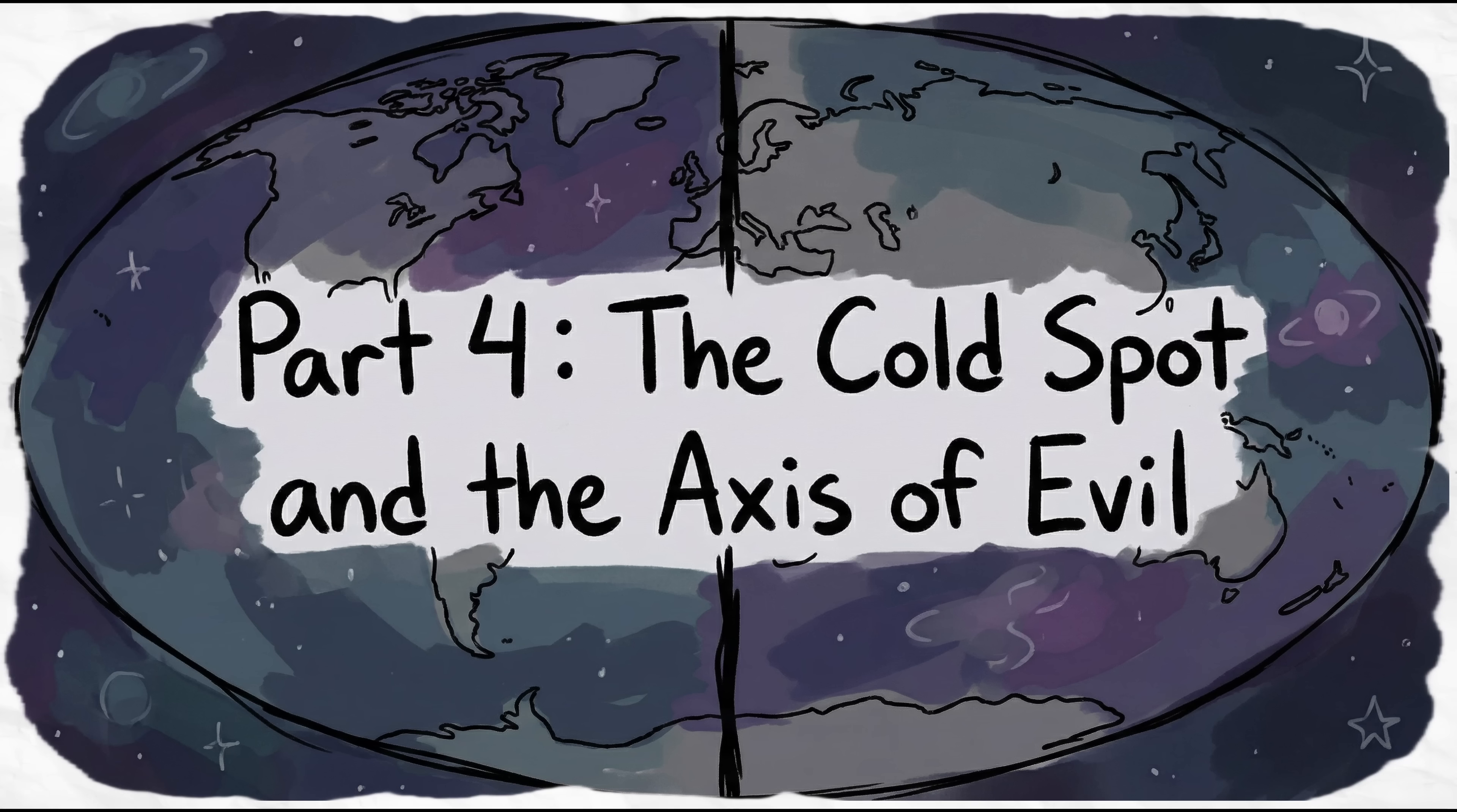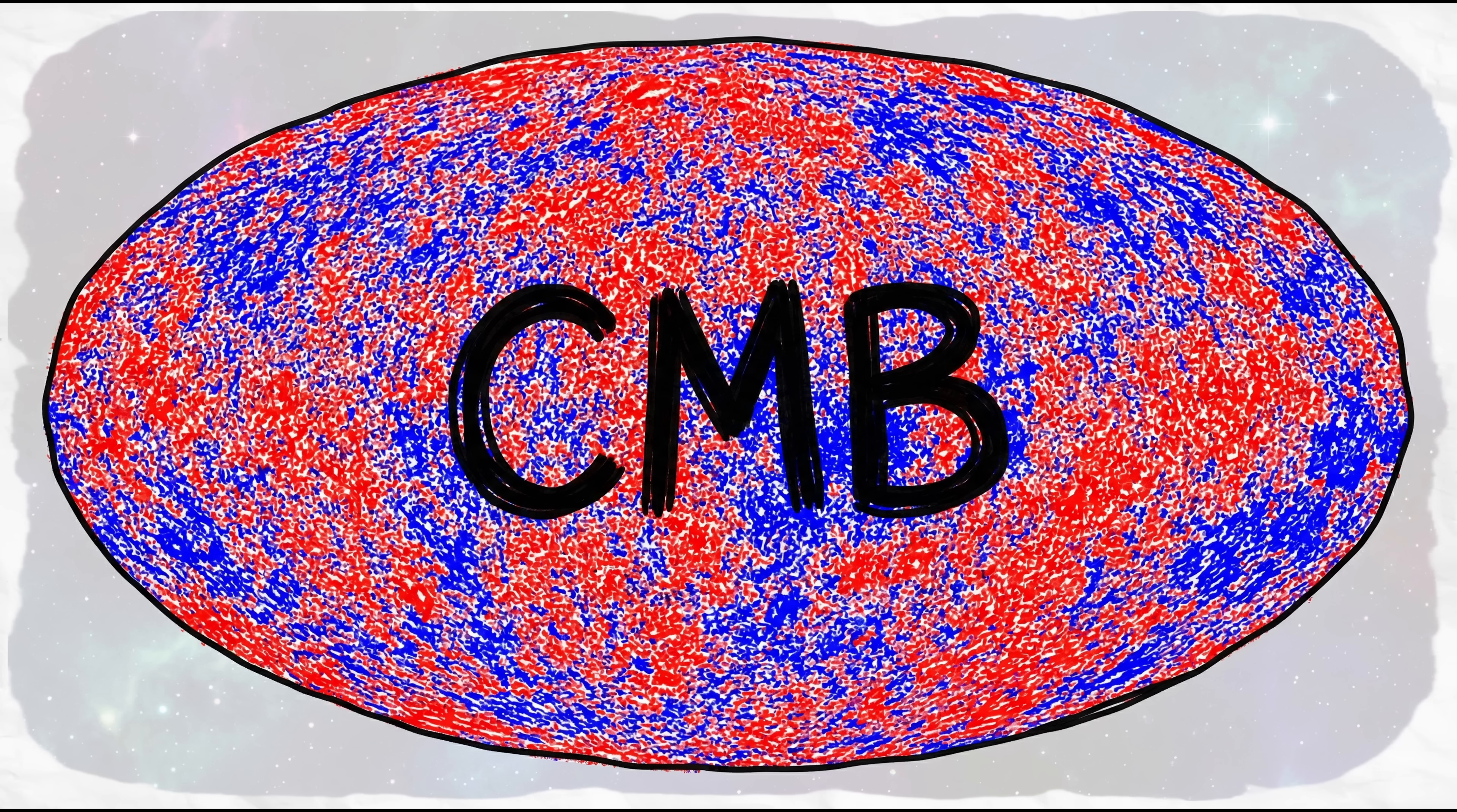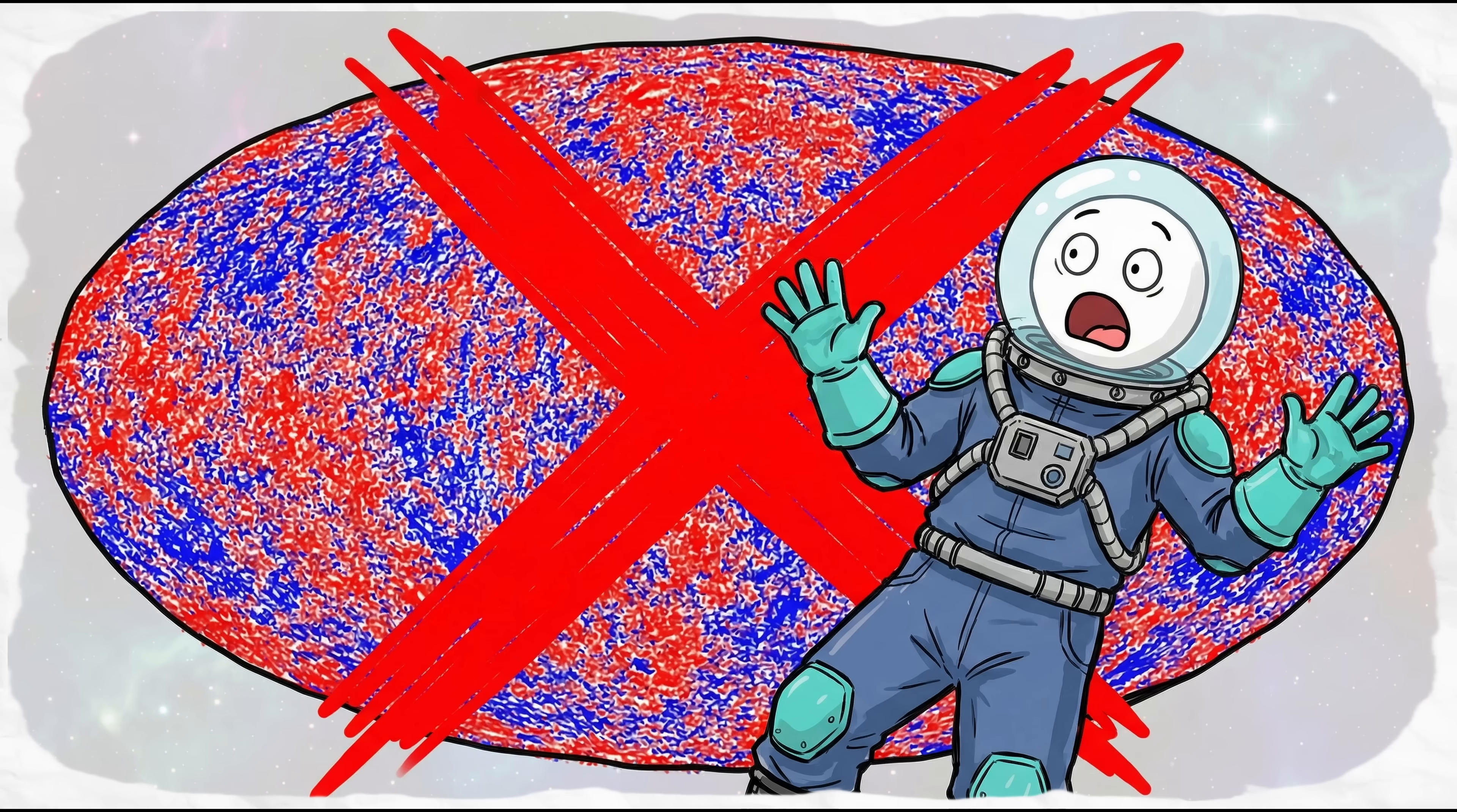The Cold Spot and the Axis of Evil. If the universe is supposed to be this big, messy blur, the cosmic microwave background, CMB, the leftover heat from the Big Bang, should look the same no matter where you look. But it doesn't.